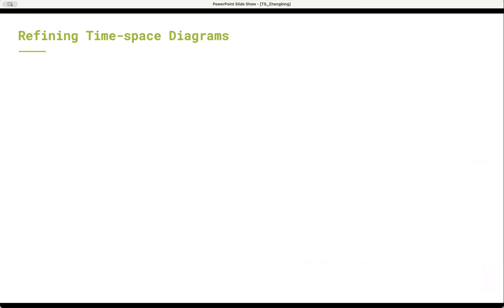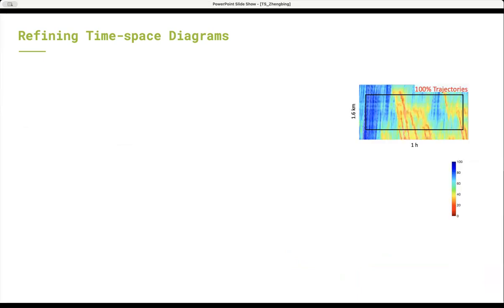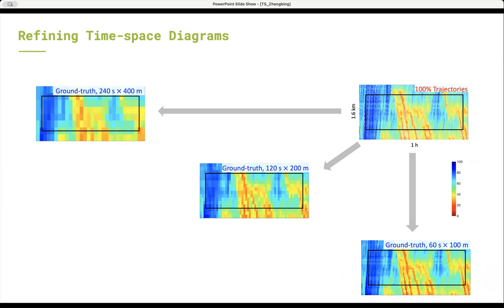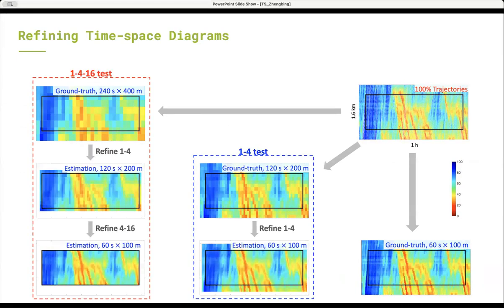To give a more direct presentation, we plot one of the estimation results. First, this is the high fidelity trajectory data used to construct time-space diagram. Second, we construct three time-space diagrams with different resolutions and take them as ground truth. Then, we conduct a 1-4 test and 1-4-16 test respectively.